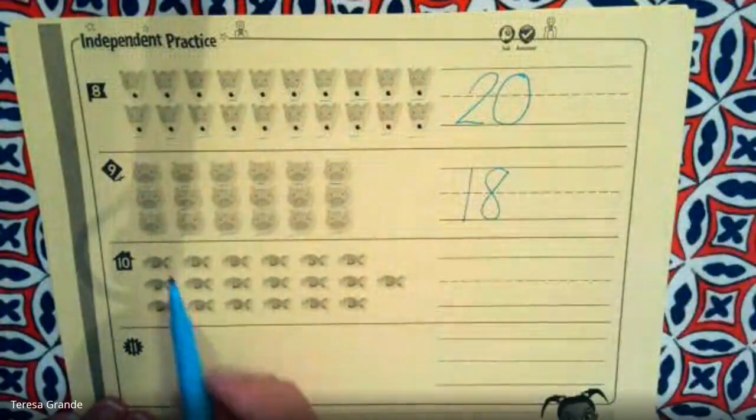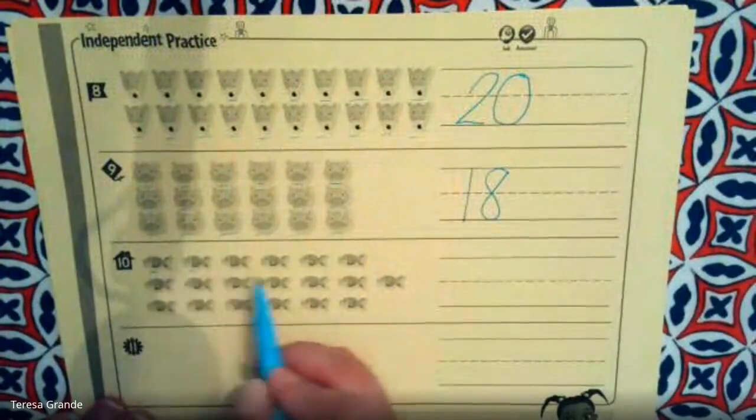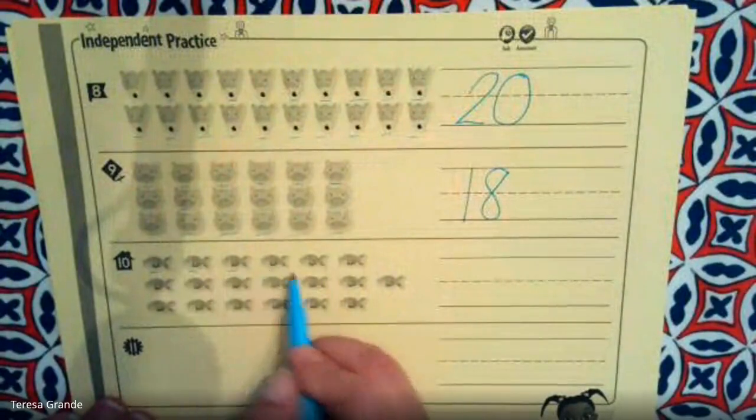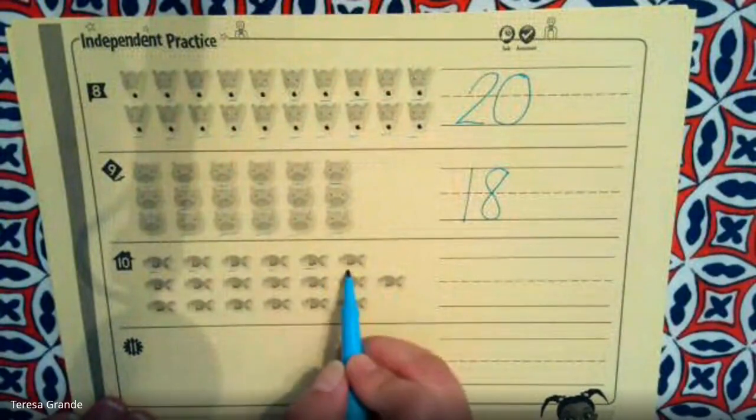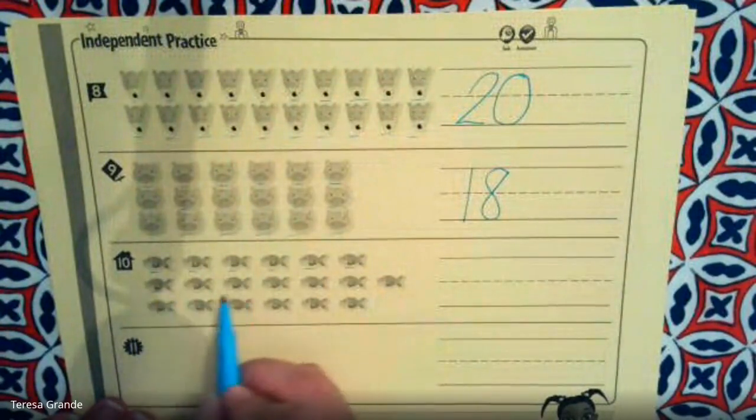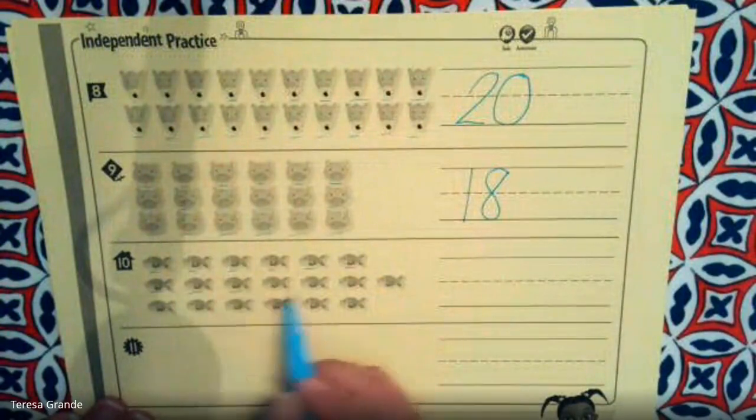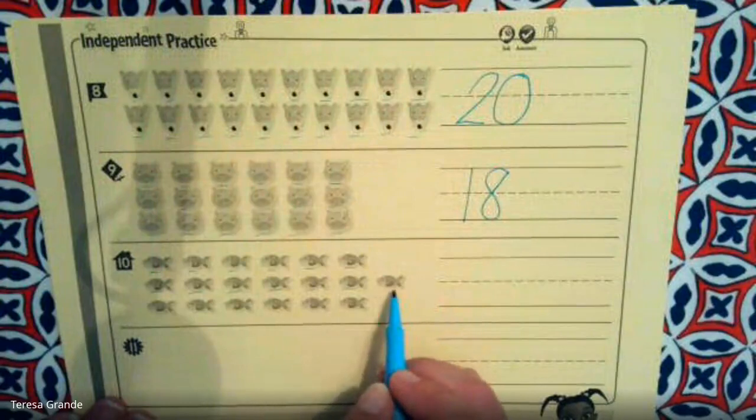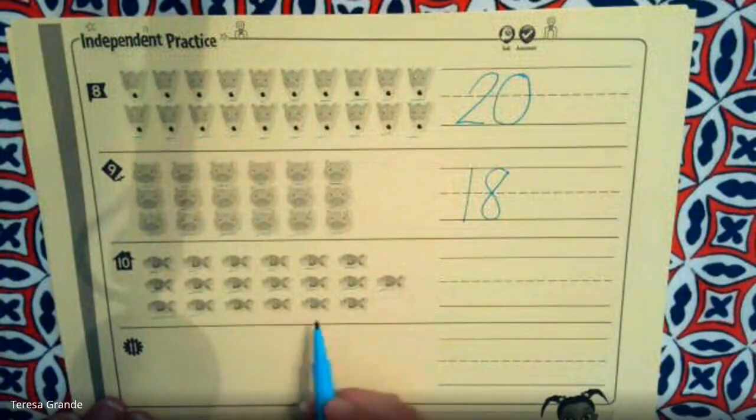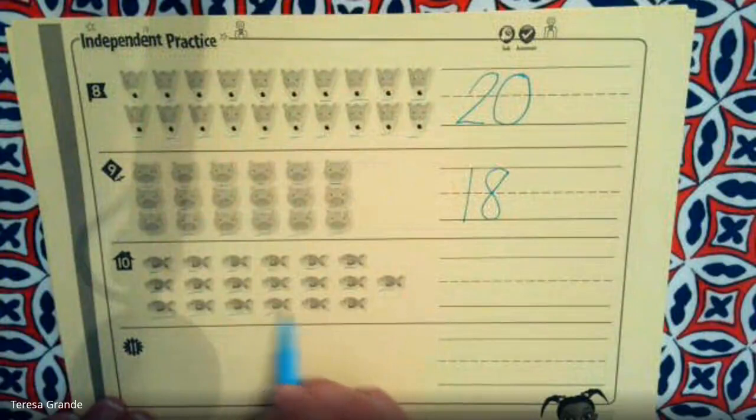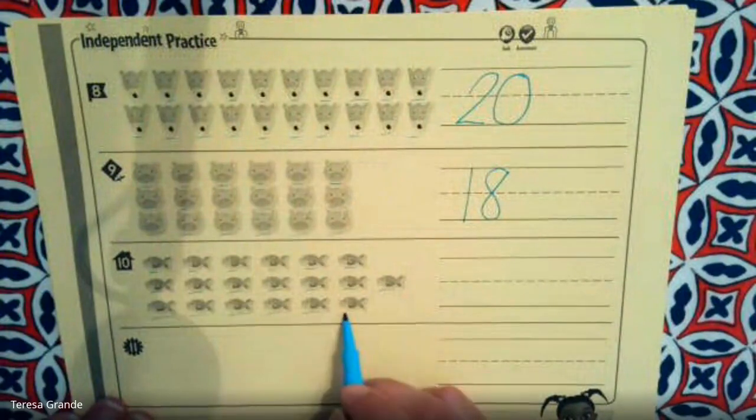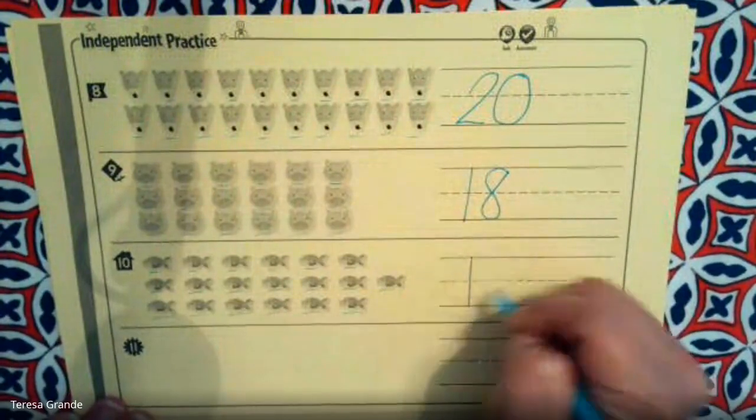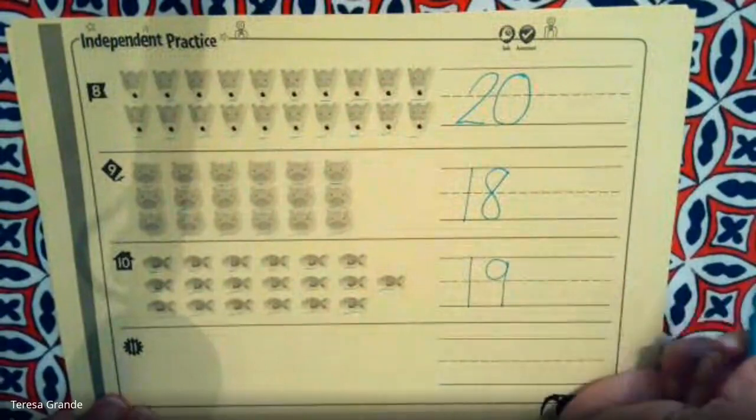Let's count the fish. 1, 2, 3, 4, 5, 6, 7, 8, 9, 10, 11, 12, 13, 14, 15, 16, 17, 18, 19. 19 fish.